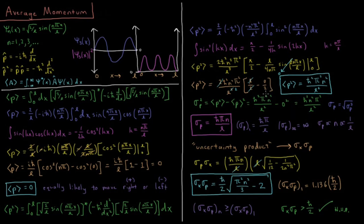Now, on to the uncertainty in momentum, just as we did for position in the last video. The variance σ² equals the expectation of the square minus the square of the expectation value. This gives h-bar squared π squared n squared over l squared minus zero squared — since ⟨p⟩ = 0 — so the variance is just the expectation of momentum squared. The standard deviation, or uncertainty σ_p, is the square root of the variance, giving σ_p = h-bar π n over l, which can also be written as hn over 2l.